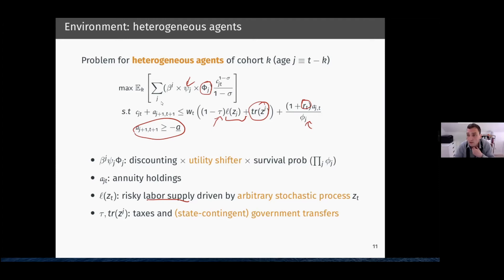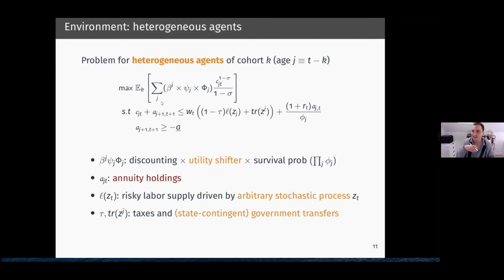A clarification: agents do not directly trade representative firm shares because the firm makes zero profits in this neoclassical setting. You can think of the annuity seller as an insurance company that owns the capital stock — the insurance company is invested in the capital stock, and here we're just modeling the problem of the agent trading these annuity contracts.